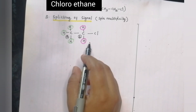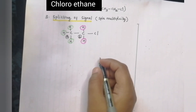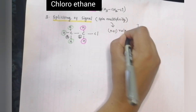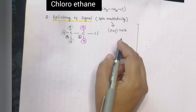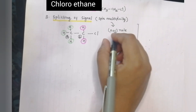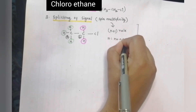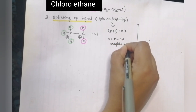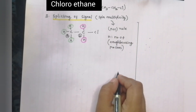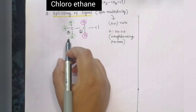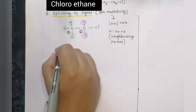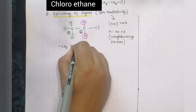The next step is the splitting of signal — spin multiplicity. We use the n plus 1 rule. This is the common rule. In the n plus 1 rule, n is the number of neighboring protons. There are two types of protons: A type (CH3) and B type (CH2). We will apply spin multiplicity to determine the number of peaks for each type.